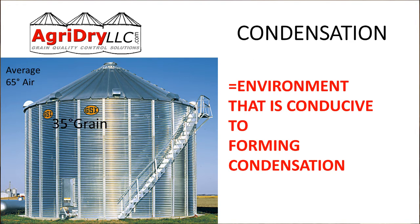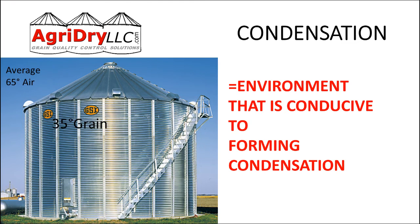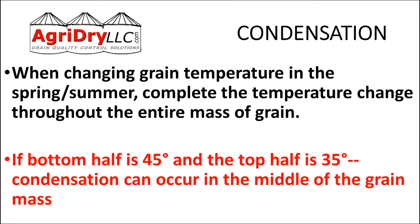Here's a good springtime example. We've got cold grain inside — 35-degree grain that just came out of winter storage — and it's a 65-degree day outside. This is an environment where we're going to see condensation. That warm air outside hits the cold grain inside, and it's going to sweat. When we're changing grain temperature in spring and summer, we need to make that change throughout the entire grain mass, not just one level.